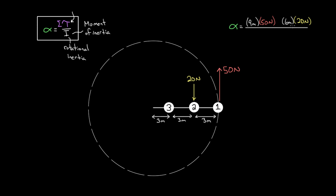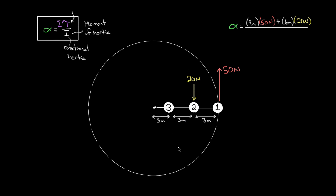Be careful with signs. The 50 Newtons is trying to rotate the system counterclockwise, and the 20 Newtons is trying to rotate it clockwise — they're opposing each other, so they have opposite signs of torque. I'm gonna represent the 20 Newton torque as a negative torque. The convention we usually pick is: counterclockwise is positive and clockwise is negative. No matter what convention you pick, they've gotta have different signs, so be careful. That's our net torque.